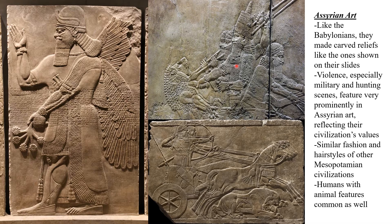We can see the Assyrians' war chariots here, and we can see them hunting a lion in very graphic terms. We also see that the Assyrians, like the Babylonians and even earlier Mesopotamian civilizations like the Akkadians and the Sumerians, portray their men with rectangular beards and long hair woven into braids. The Assyrians also liked to give their human subjects animal features, like eagle wings.